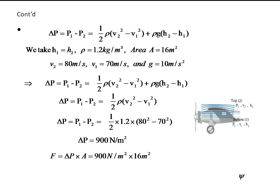Therefore, the force is delta P times A, that's 900 newton per meter squared times 16 meter squared, and we get 14,400 newtons. So the airplane will experience an upward force or dynamic lift of 14,400 newtons.